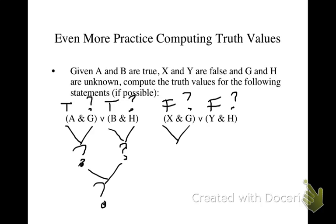Well, if X is false, then we know X and G is false. And likewise, Y and H, because Y is false. Well, then we have both sides of the disjunction are false, so the disjunction as a whole is false.